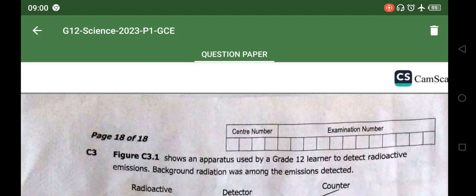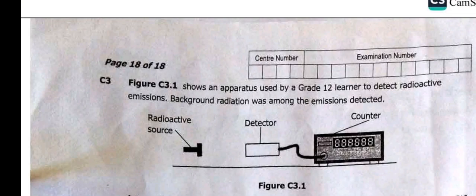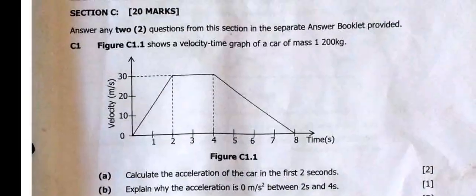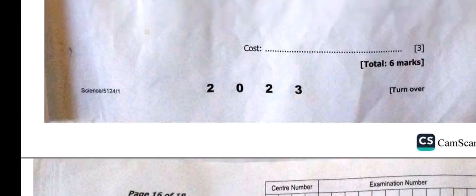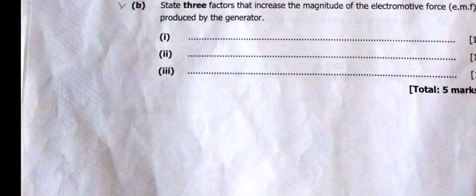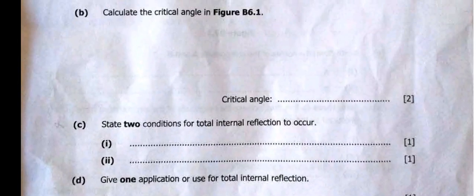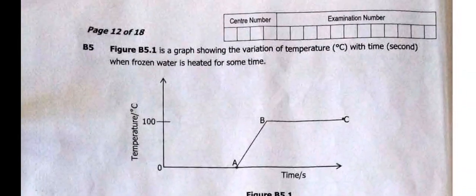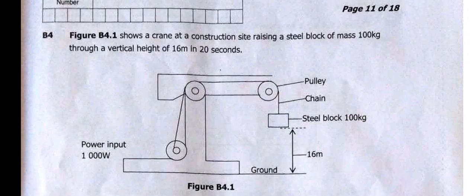Good morning everyone and welcome to this video. We are going to solve question B4 on Section B, a physics 2023 GCE science paper one. We're going to look at Figure B4.1, which shows a crane at a construction site raising a steel block of mass 100kg through a vertical height of 16 meters in 20 seconds.